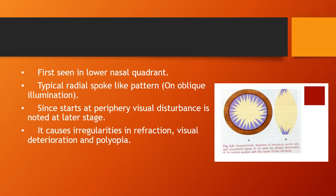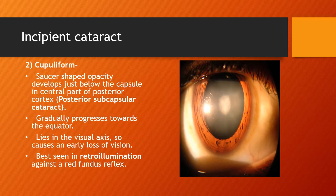Cuneiform cataract causes irregularities in refraction, visual deterioration, and polyopia. In cupuliform cataract, there is a saucer-shaped opacity developed just below the capsule in the central part of the posterior cortex, which is why it is also known as posterior subcapsular cataract. These opacities gradually progress towards the equator — the opacity develops in the center and extends towards the periphery. It lies in the visual axis, so it causes early loss of vision, and it is best seen in retroillumination against the red fundal glow.